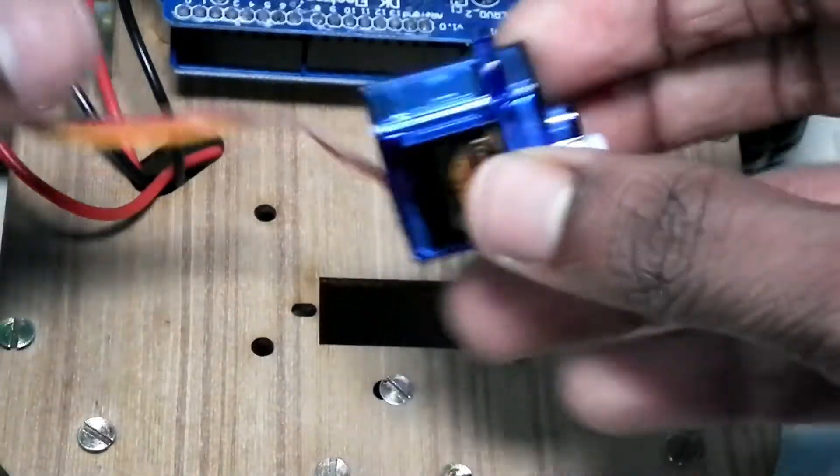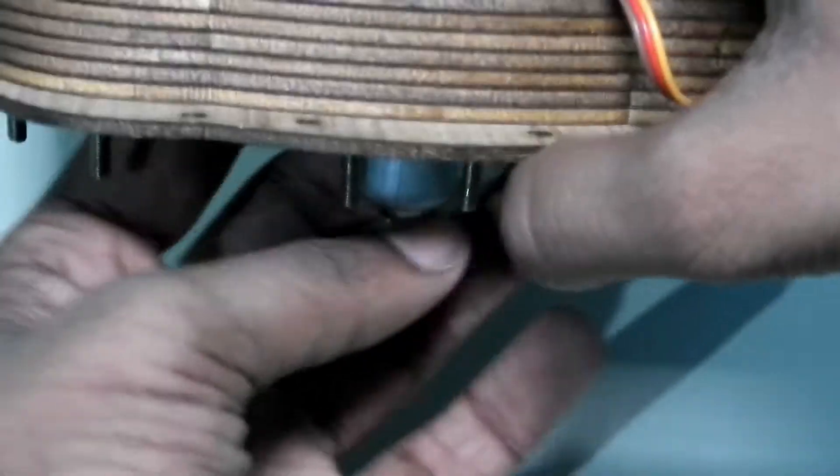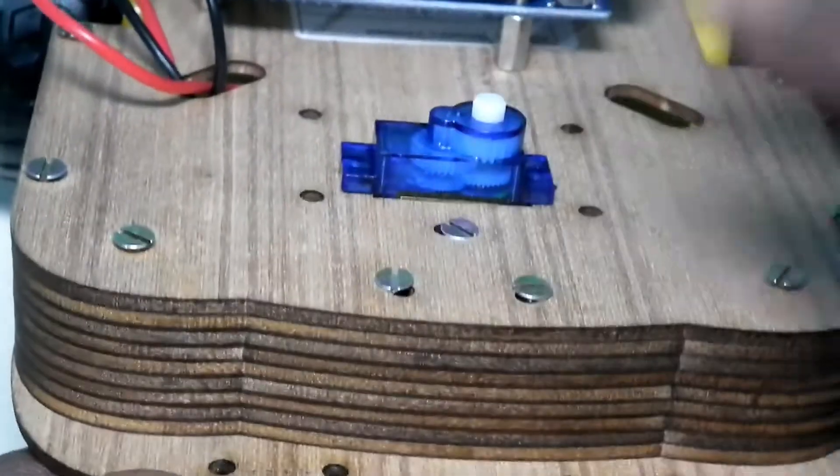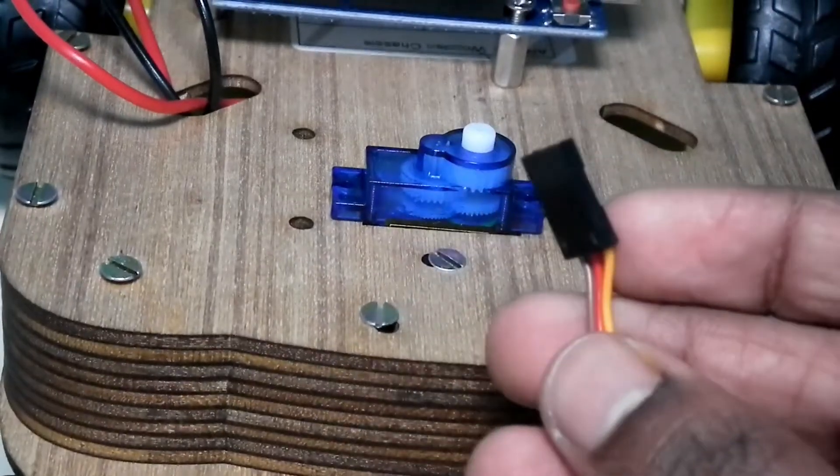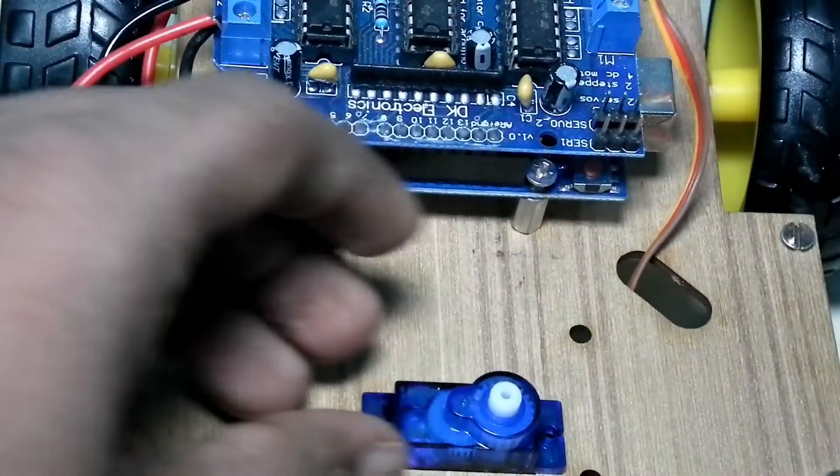We are going to take our servo motor. We will take the wire inside through this part, place it like this way. We will take it out through the other hole over here so that it comes out.